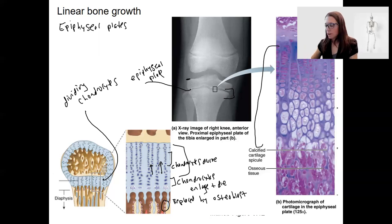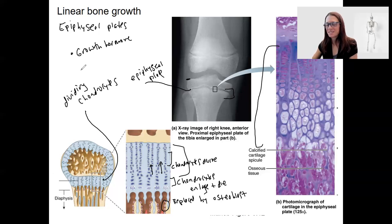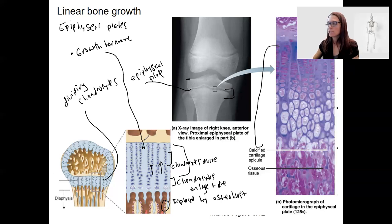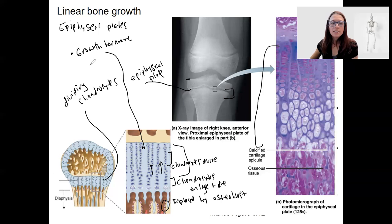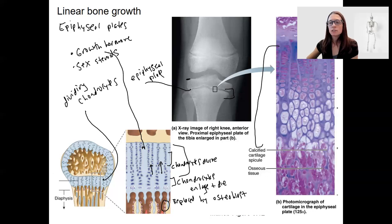This process is triggered by a couple of hormones. Growth hormone, which is high during periods of adolescence and in young kids, actually triggers proliferation — dividing of these chondrocytes to increase bone length. It also increases calcium retention in the bone. Sex steroids also stimulate bone growth — testosterone and estrogens that are increased in levels at puberty. So that's linear bone growth.